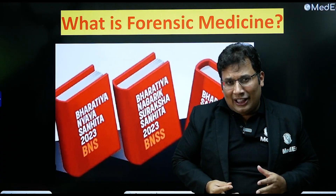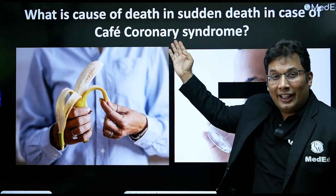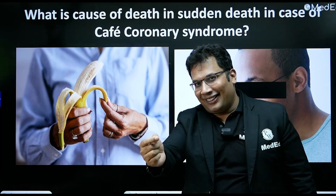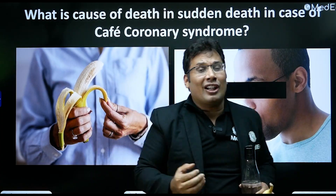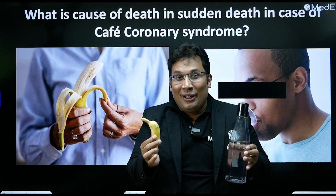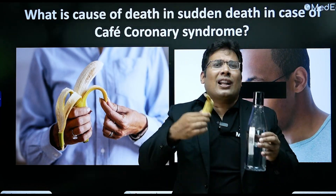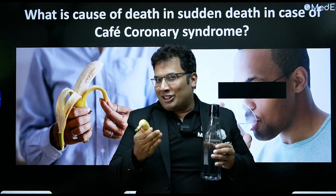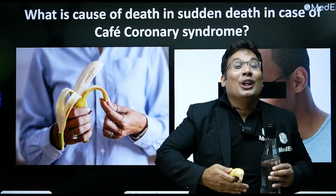By using your forensic knowledge, you can solve many crime mysteries. For example, cafe coronary syndrome is a case of sudden death in a bar or restaurant which mimics a cardiac arrest or heart attack. Using a water bottle as an alcohol bottle and a banana as solid food — when a person is having solid food under the influence of alcohol, there are chances of a foreign body entering the larynx, which stimulates the vagus nerve, causing vasovagal inhibition and death.